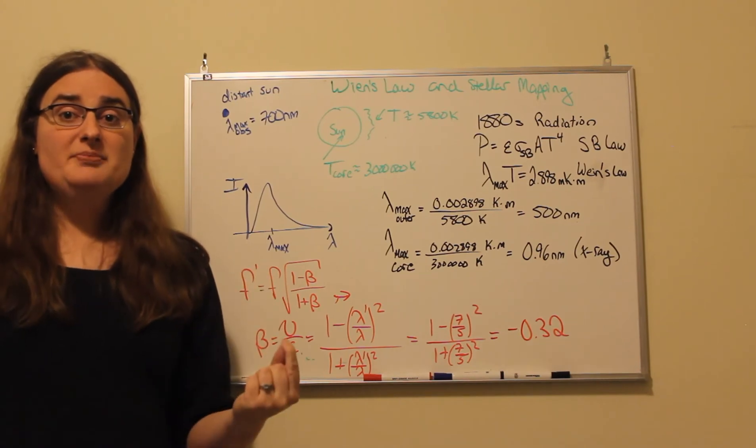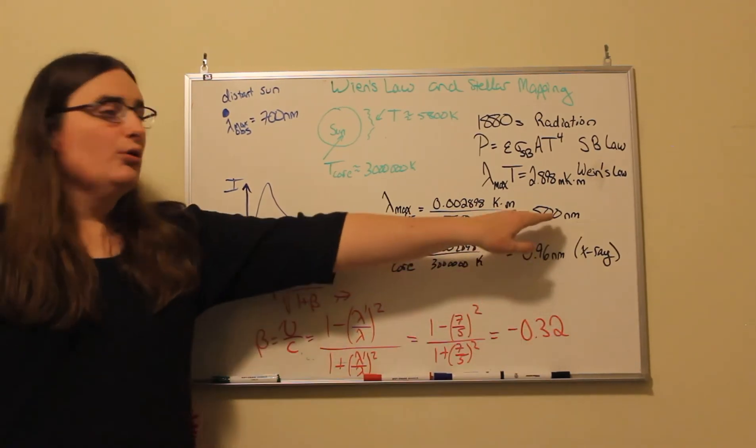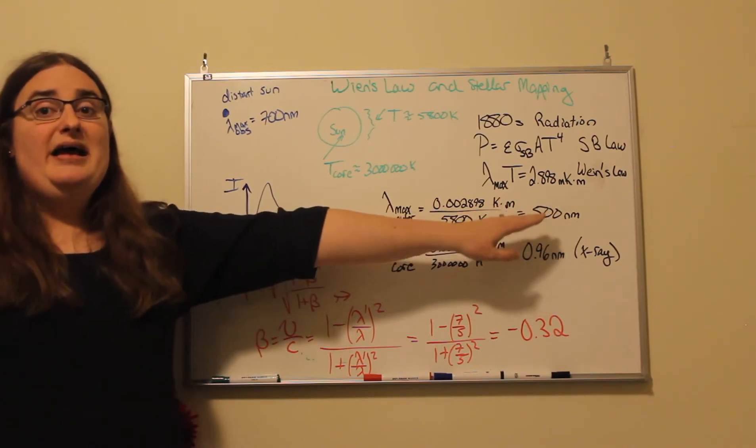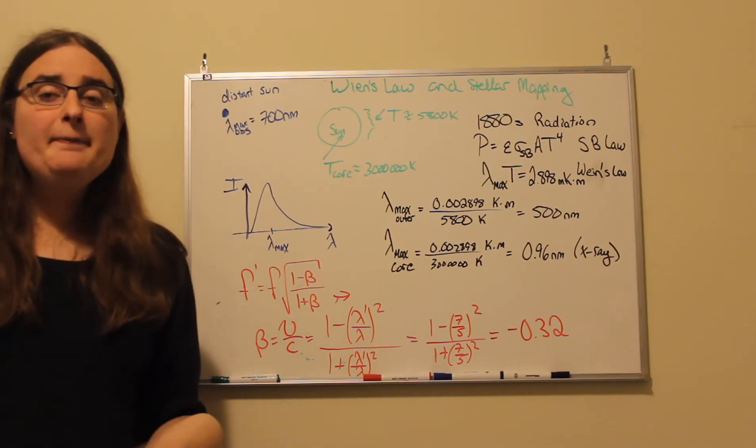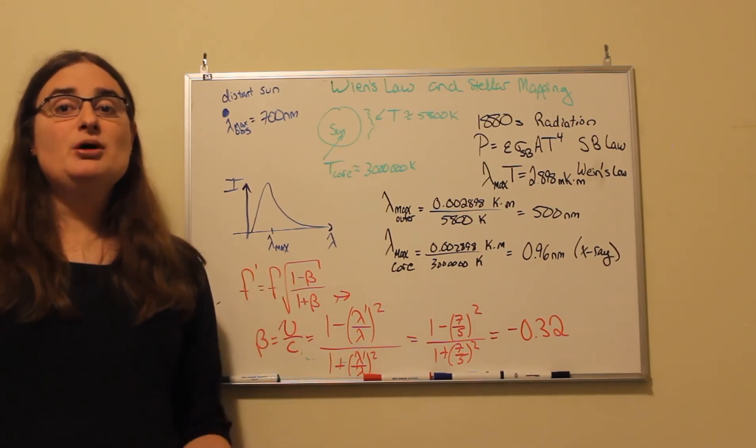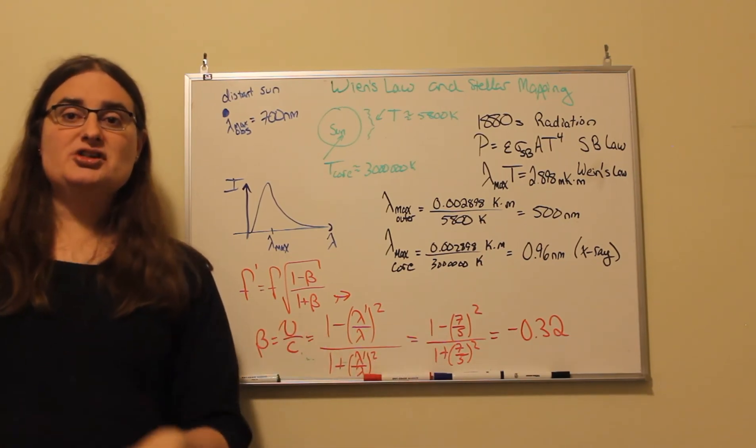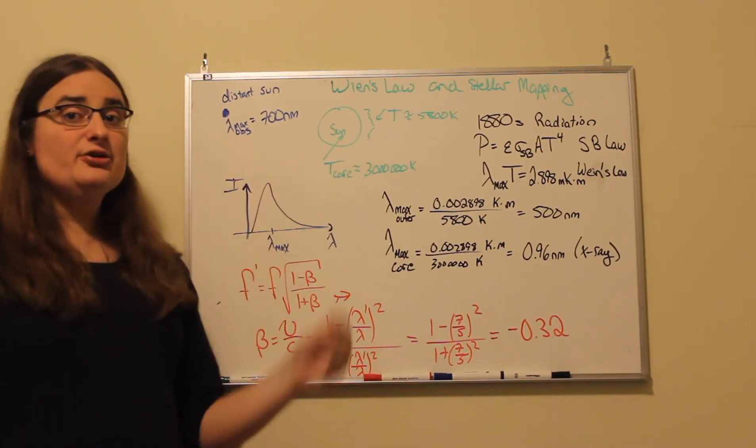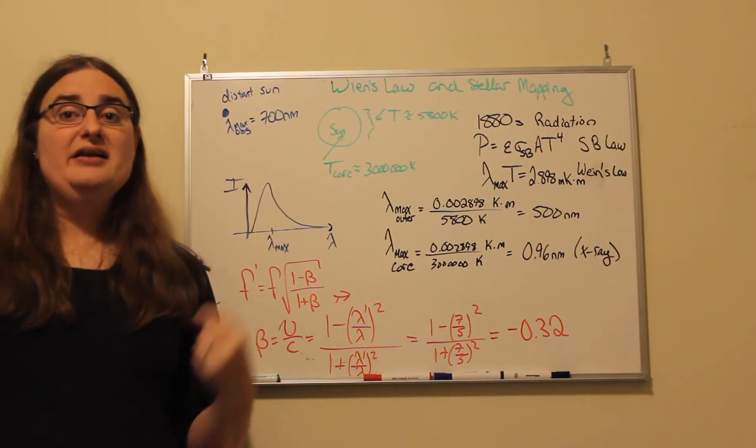In astronomy, this is what we refer to as red shifting, where we take light and its frequency shifts towards the red end of the spectrum. And that happens by relative motion away from Earth. If instead the object were moving towards Earth, the wavelength would decrease, the relative frequency would shift up, and we would call that a blue shift.